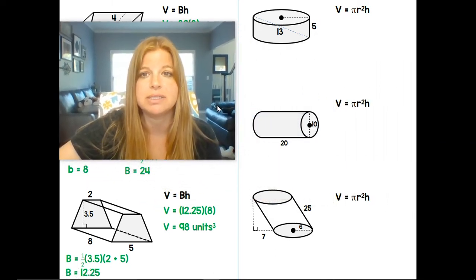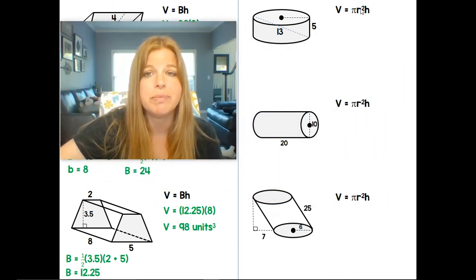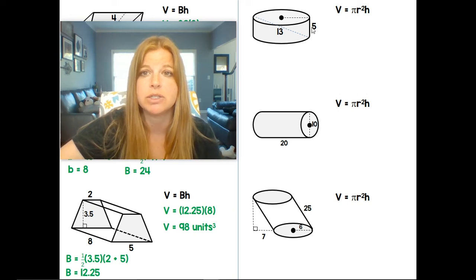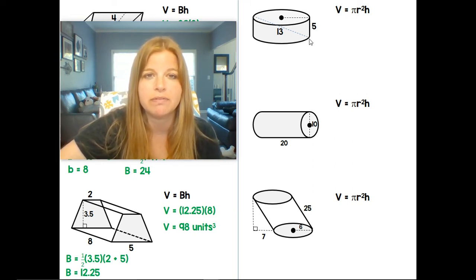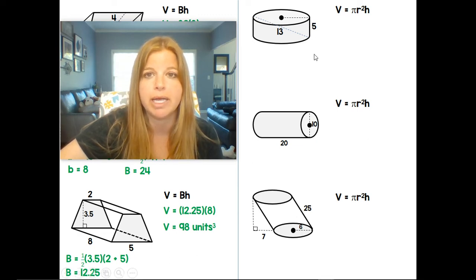For my cylinders, same idea. So area of the base, which is pi r squared, because that's the circle, multiplied by the height. Now here I'm given the diagonal length of 13 and the height of the cylinder is 5. I need to know the radius. So what's actually happening here is this is a right triangle. I need to calculate that radius, which if I doubled it would be the entire leg of a right triangle here.